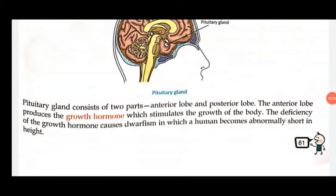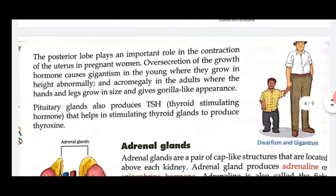The anterior lobe produces the growth hormone, which stimulates the growth of the body. The anterior lobe releases growth hormone that regulates our body's growth. The deficiency of growth hormone causes dwarfism, in which a human becomes abnormally short in height. So the anterior lobe of the pituitary produces growth hormone, which is responsible for the growth of the individual organism.